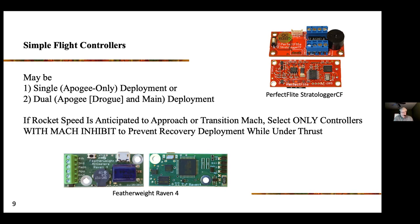There are mathematical approaches to implement Mach inhibits with just a barometer, but you're better off with a system that also includes accelerometers — it makes the Mach inhibits more foolproof and less likely to cause inadvertent deployment on ascent. As the rocket approaches Mach, pressure builds up on the barometric sensor. If the controller thinks it's descending when it's still ascending, it could deploy the charge at high speed, which would be disastrous for your mission.